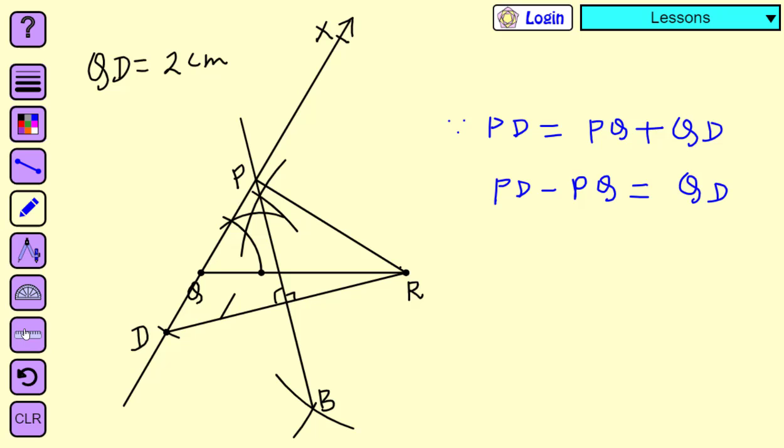Since PB is perpendicular bisector of DR, hence PD is equal to PR. We can replace PD by PR. PR minus PQ is equal to QD.